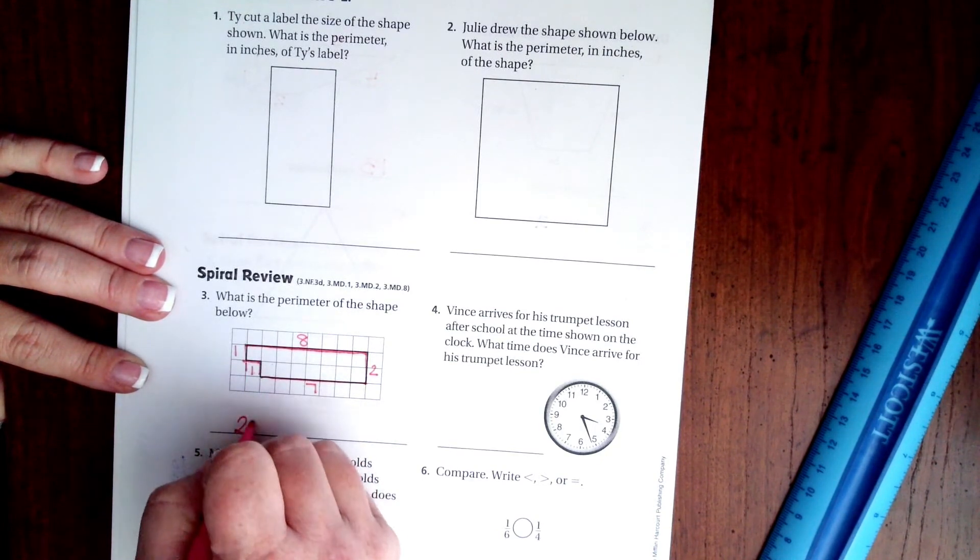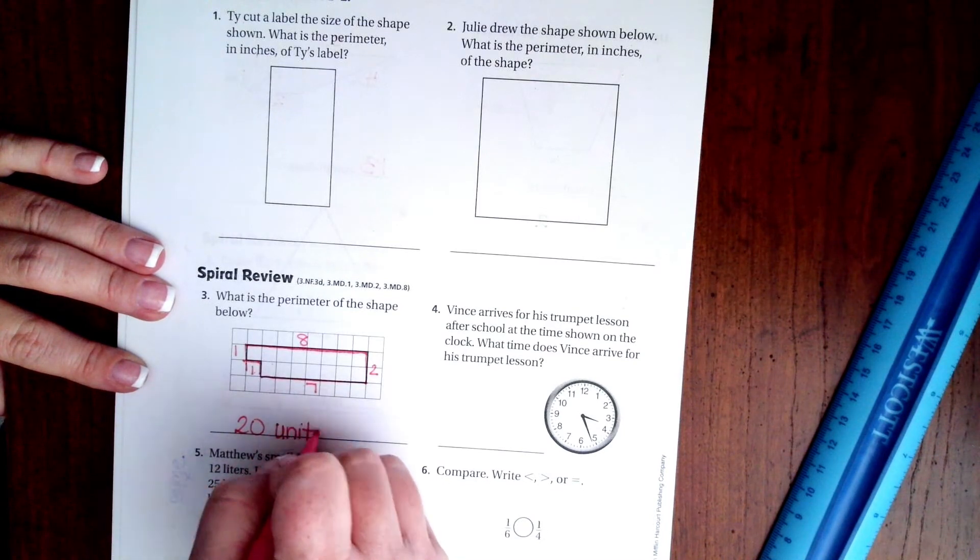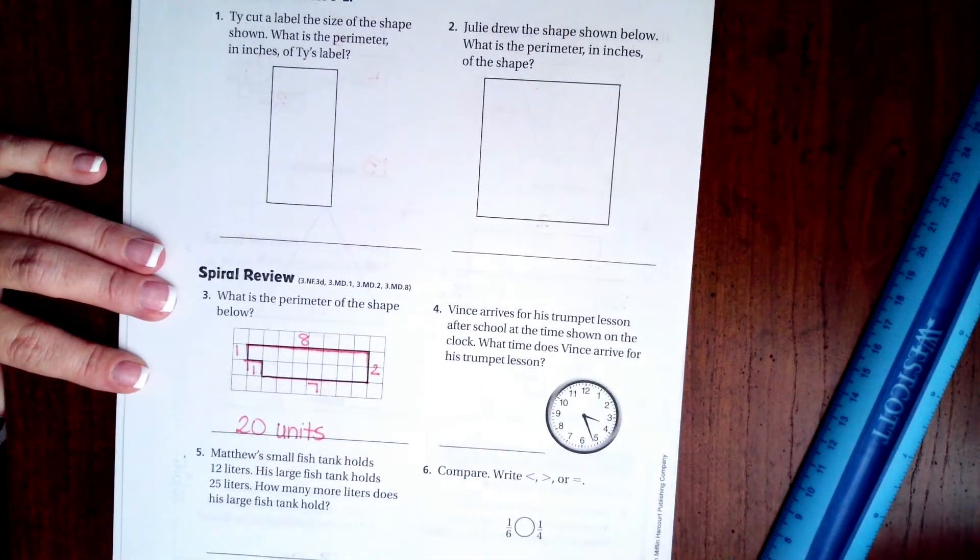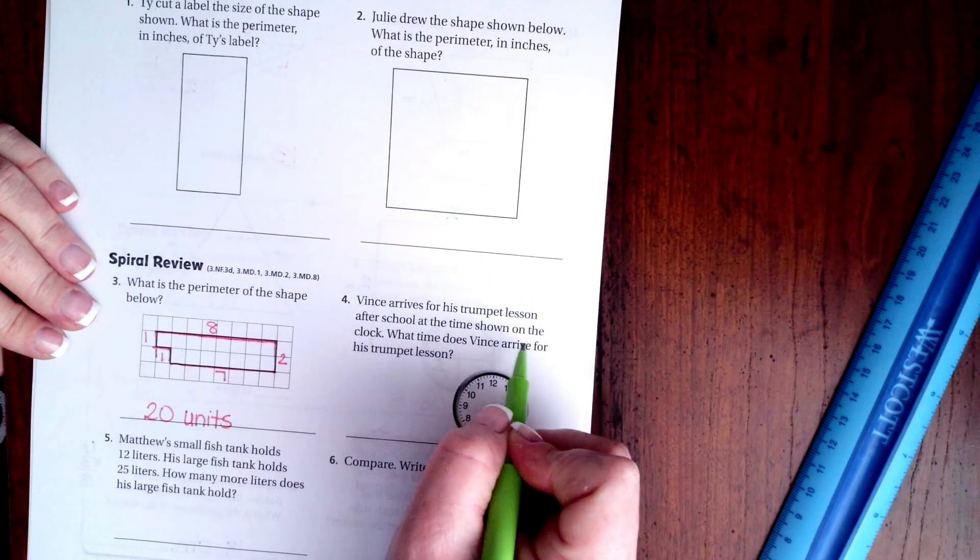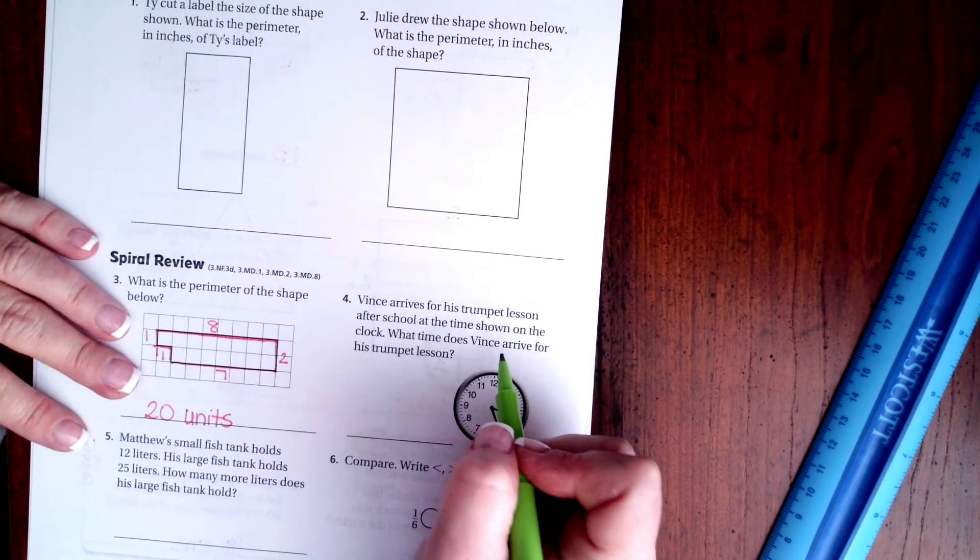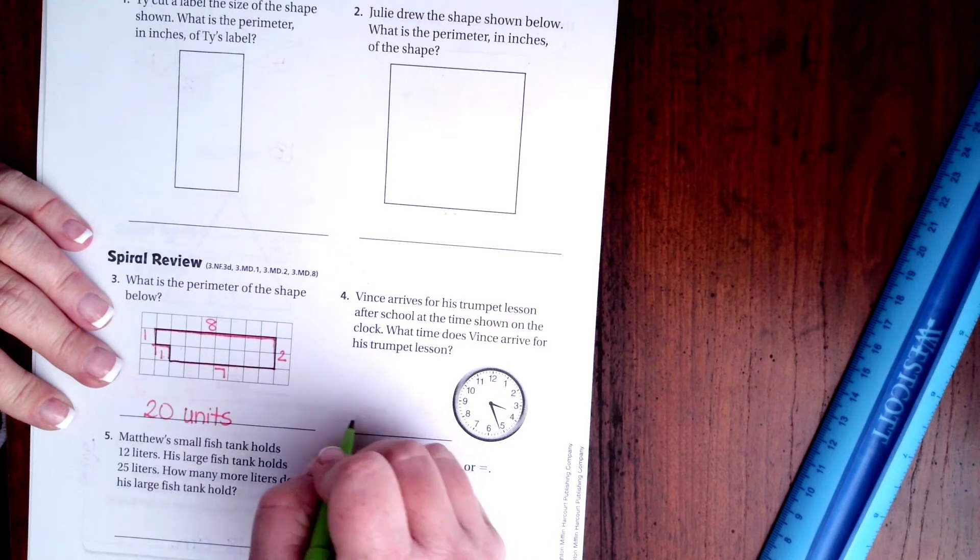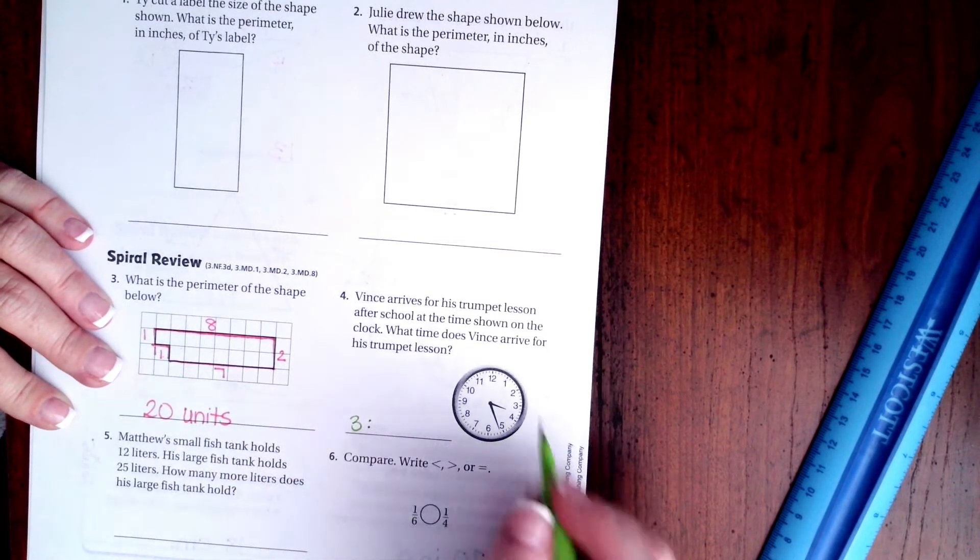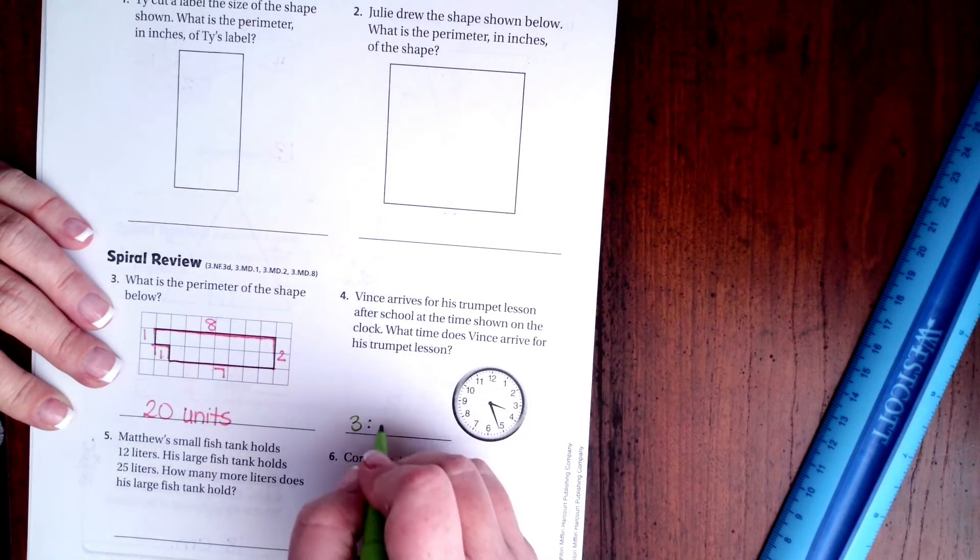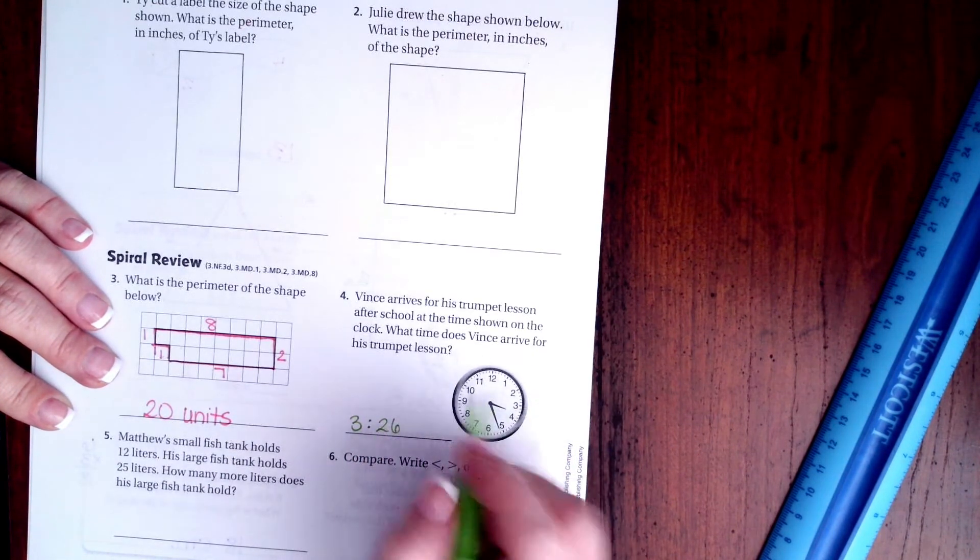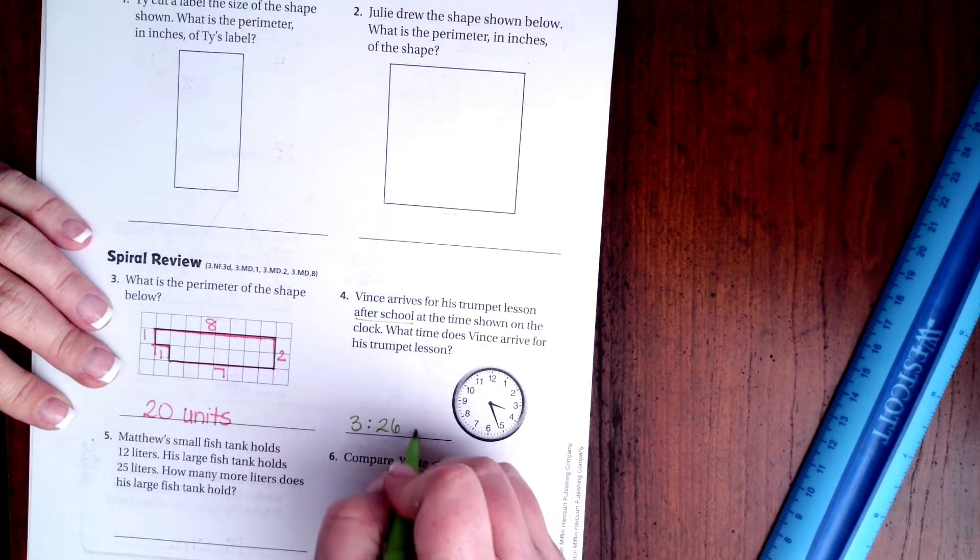Vince arrives for his trumpet lesson after school at the time shown on the clock. What time does Vince arrive for his trumpet lesson? Well, the hour hand is past the three but hasn't touched the four yet, so we're stuck at three. And then five, ten, fifteen, twenty, twenty-five, and it's one minute past that, so twenty-six. And it says after school, after school, that's PM.